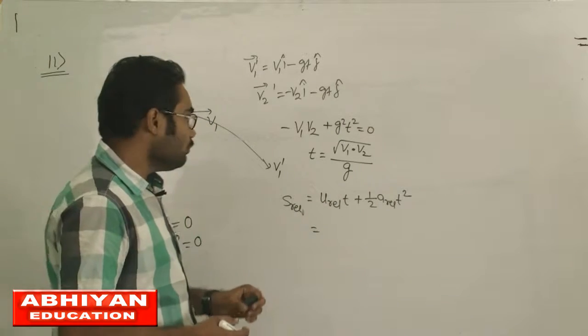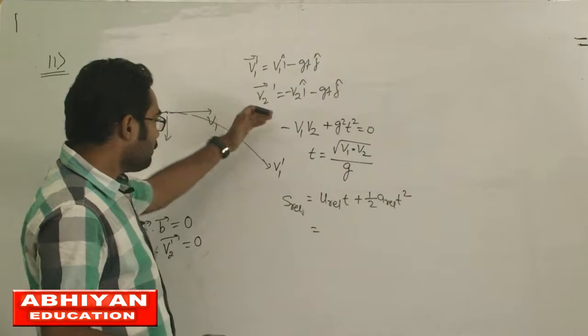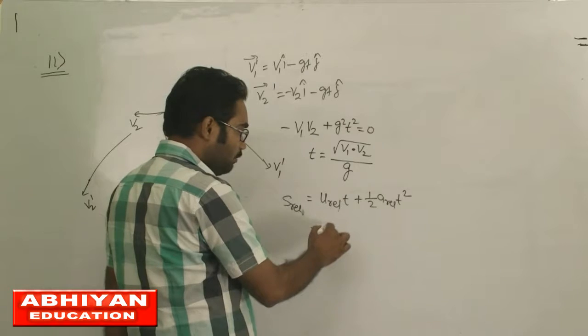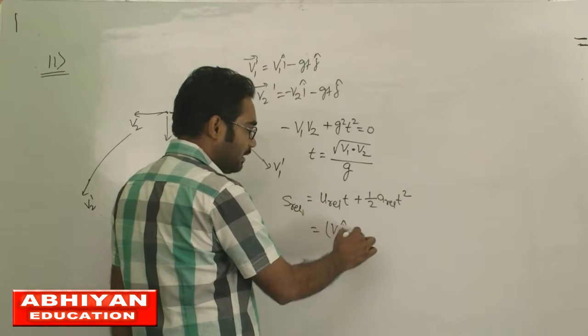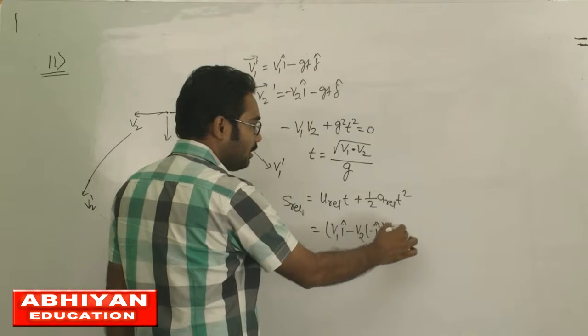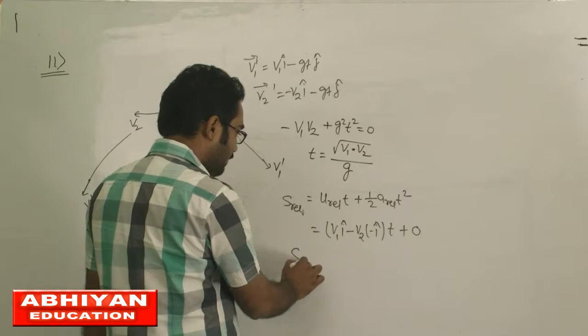So u relative is what? Both have V1 as plus i and one as minus i. So u relative will be V1i minus V2 minus i into t. And here a relative is zero, so s relative value becomes...